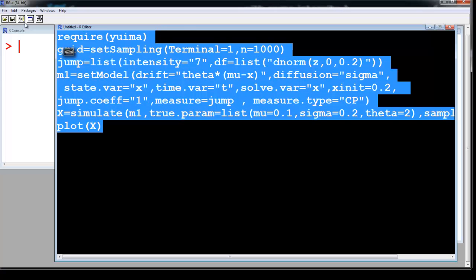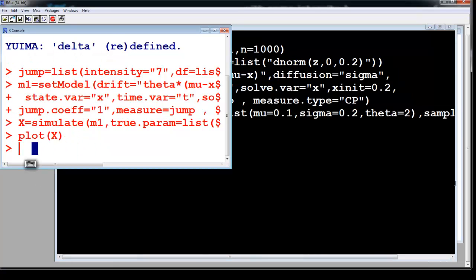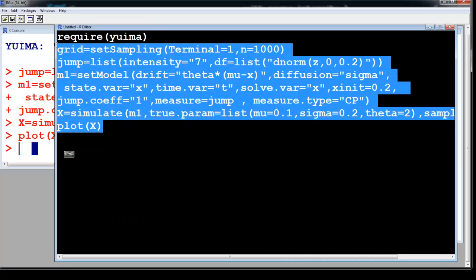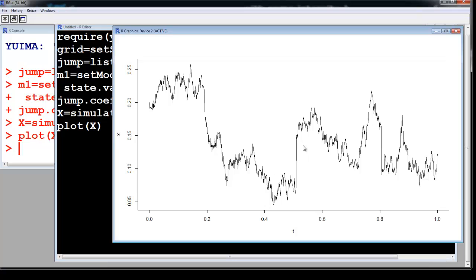We are going to select it and hit the run button. And here you can see the jumps. So there is a jump here, there is a jump here, there is a jump here. So you can simulate this many times and you will get different jumps.